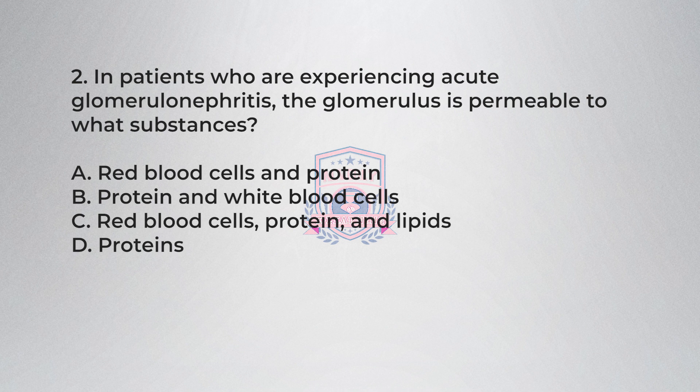Question 2: In patients who are experiencing acute glomerulonephritis, the glomerulus is permeable to what substances? A) Red blood cells and protein, B) Protein and white blood cells, C) Red blood cells, protein, and lipids, D) Proteins.